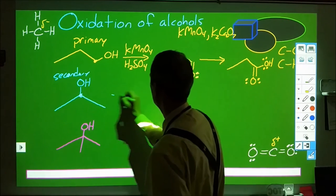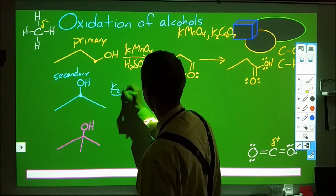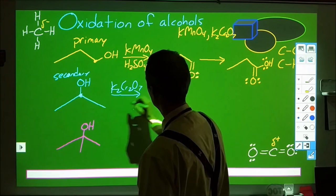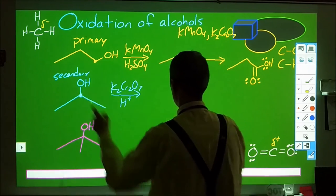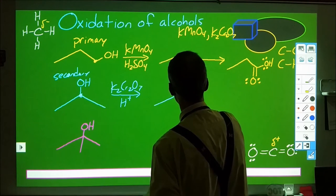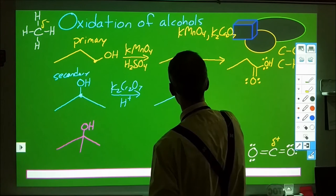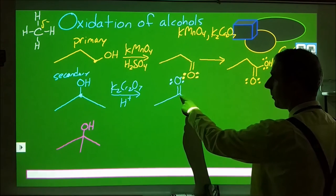If we now add our reagents, let's add the dichromate this time and some kind of acid catalyst, this is going to increase the amount of oxygen bonded to it. We start with the double bond there and form the ketone.